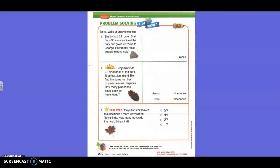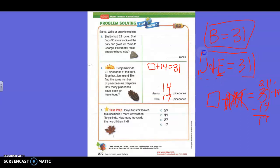Benjamin finds 31 pine cones at the park. Together, Janet and Ellen find the same number of pine cones as Benjamin. How many pine cones could each girl get? Benjamin had 31. These two girls also found 31, but together. So Jaren said 14 was going to be Jenna's number. So then we had to subtract 14 from 31 so we could find out. We found out that it was 17. Ellen found 17.